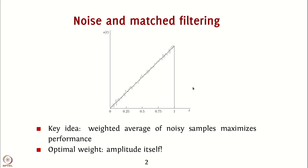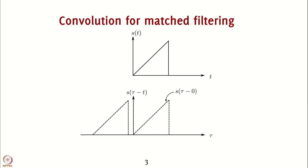This is why matched filter theory tells you that this particular approach gives you the best SNR-maximizing solution, taking into account all the values with appropriate SNRs. An exercise you can think of is that if you take a rectangular pulse, you can weight all the points equally because every point has equal SNR. The other point we have to consider is that we want to implement matched filtering — which is effectively correlation — as a convolution.